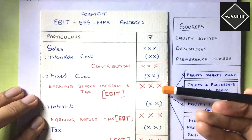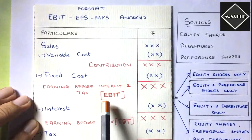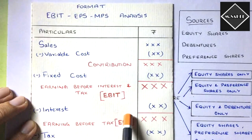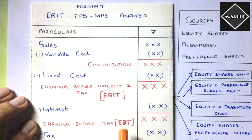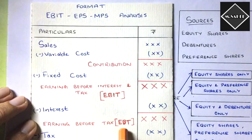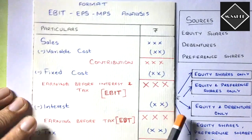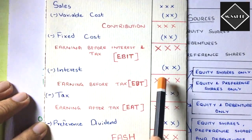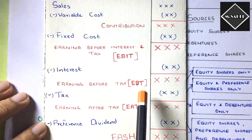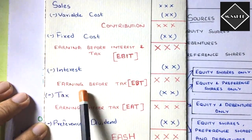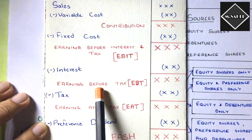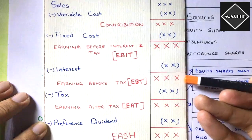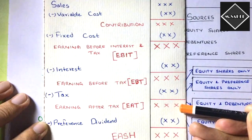Starting from EBIT — Earning Before Interest and Tax — first you deduct the interest on debentures. After deducting interest, you remove the I from EBIT and get EBT: Earning Before Tax. Then you remove the T — you deduct tax from EBT. Earning Before Tax minus tax gives you EAT: Earning After Tax.